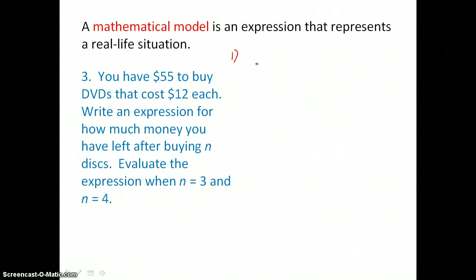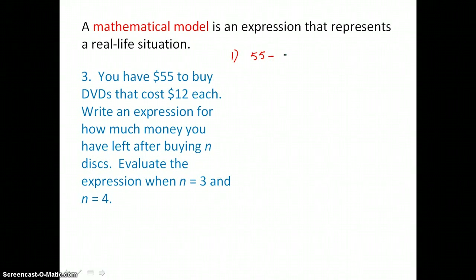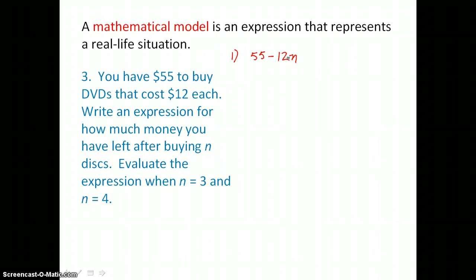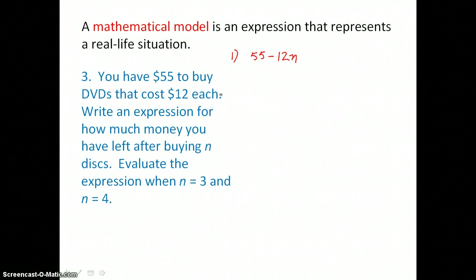Let's write an expression for how much money you have left after buying N discs. If you start with $55 and subtract the cost of N discs — which we find by multiplying 12 times N — that product gives us the total cost for N discs. We take that away from 55 to find how much money is left. So our expression is 55 minus 12N.